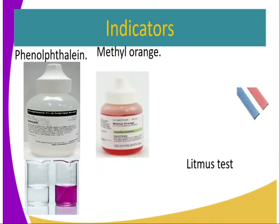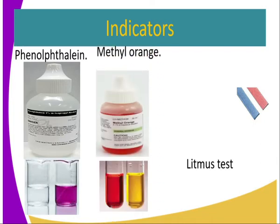As for methyl orange, it is orange in color. It has two definite colors. In neutral, it is still orange. But in acidic and basic substances, the color changes — from orange to red in acid, and orange to yellow in base.